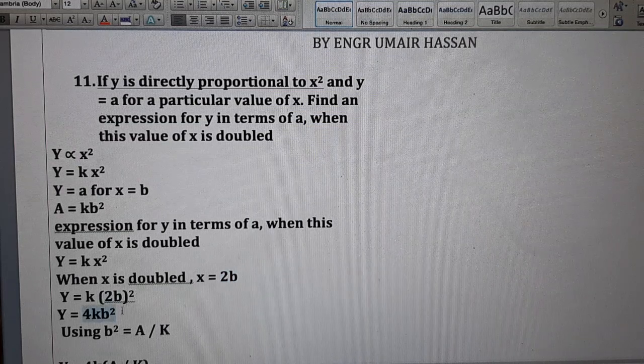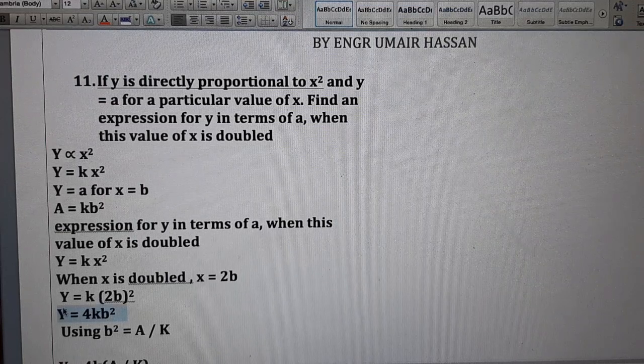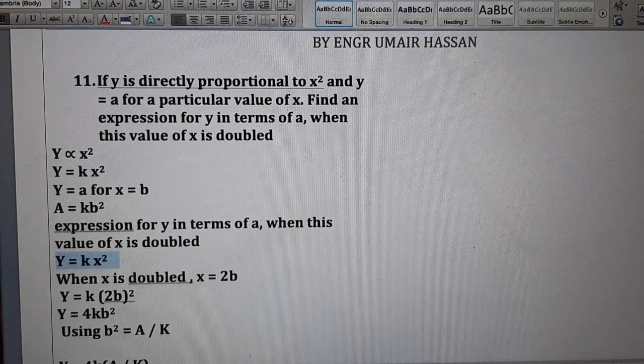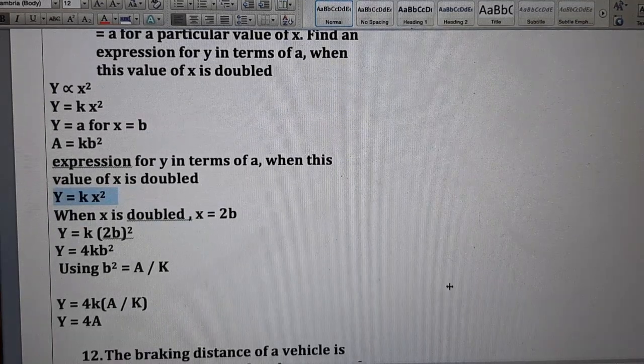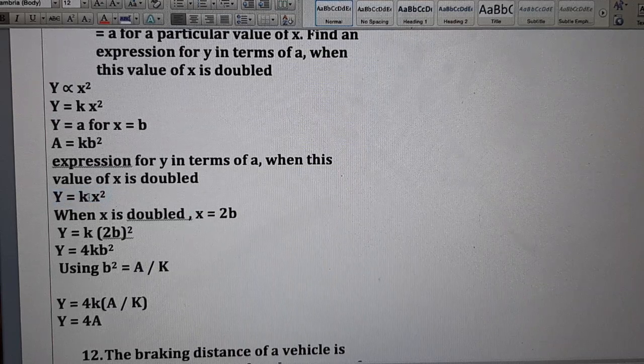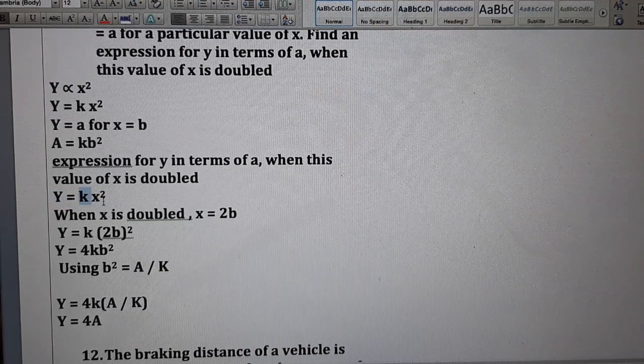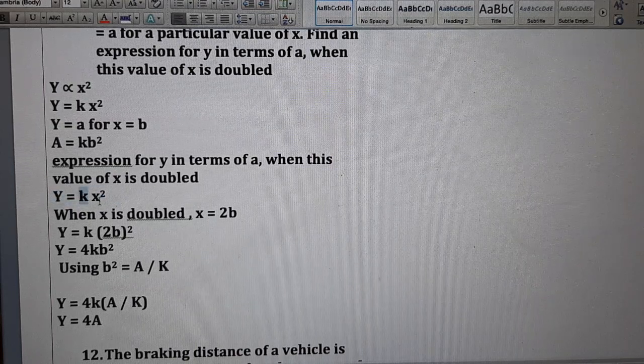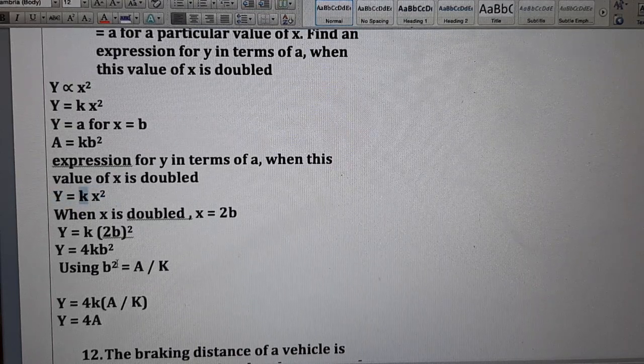Now, this is y equal to 4b square and this is y equal to kx square. From above, from this equation, the value of k is y over x square. From here, you can find the value of k which is y over x square.